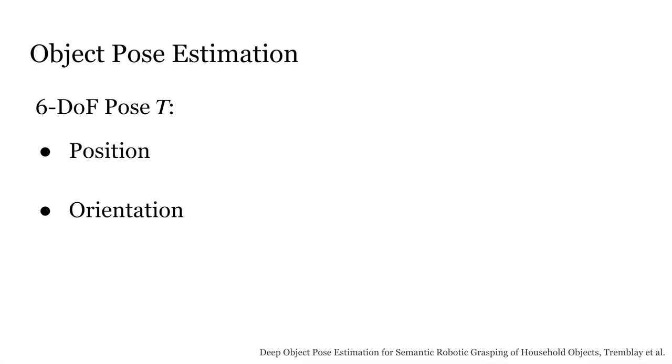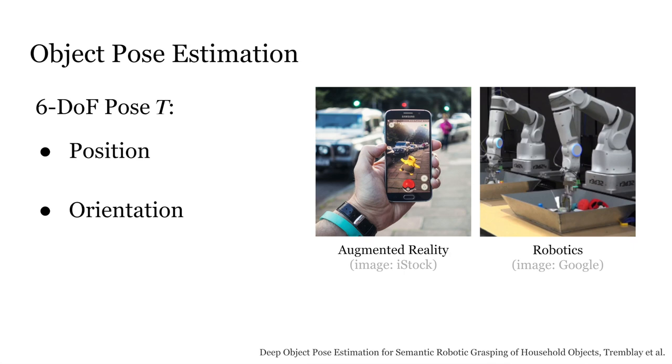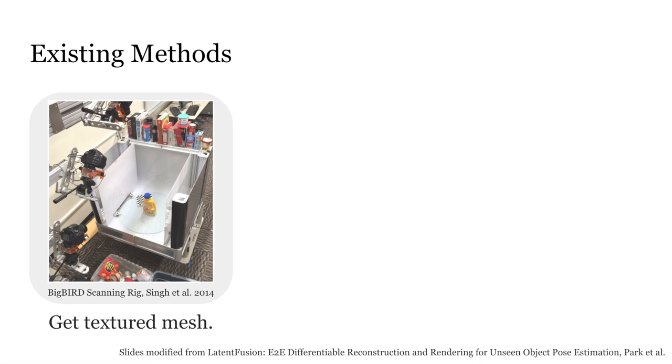Six Degrees of Freedom Object Pose Estimation refers to the task of estimating an object's position and orientation. This task is important both for augmented reality and robotics. The typical solution for this problem is as follows.